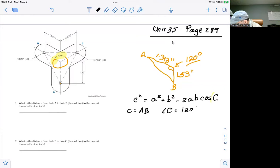And then A and B are just the other two sides, 1.313 and 1.53.